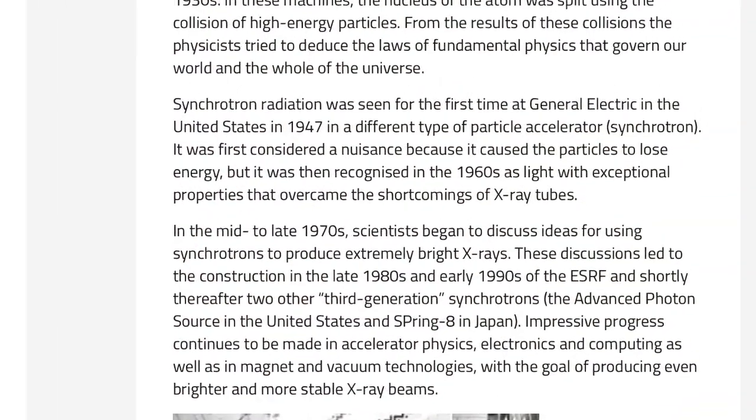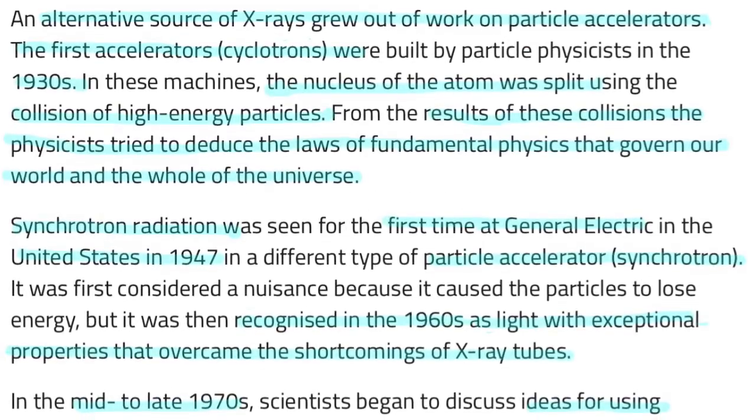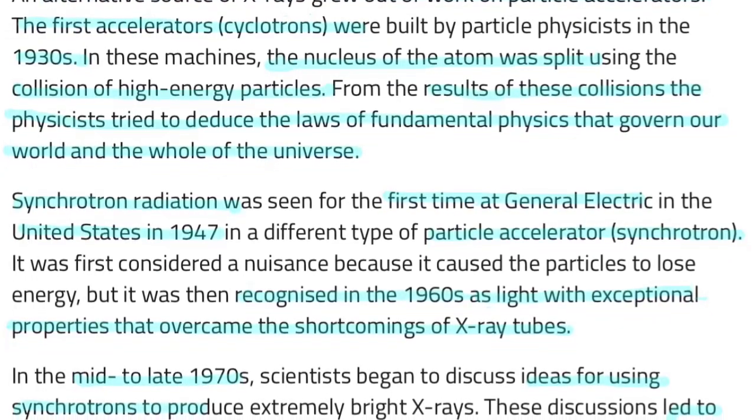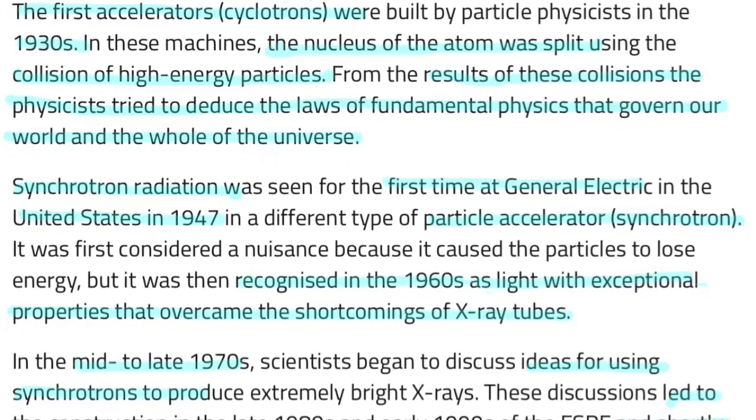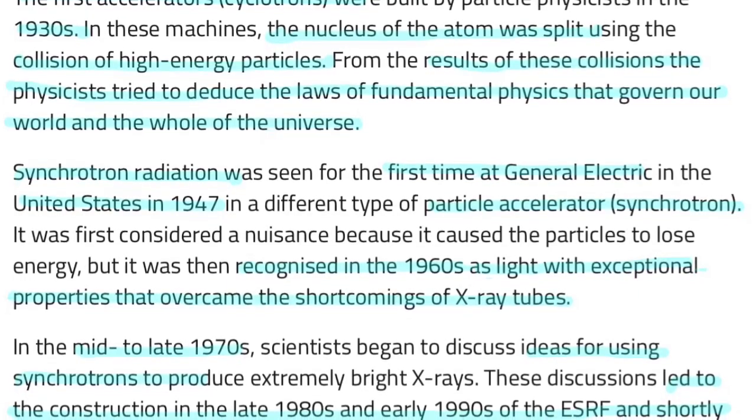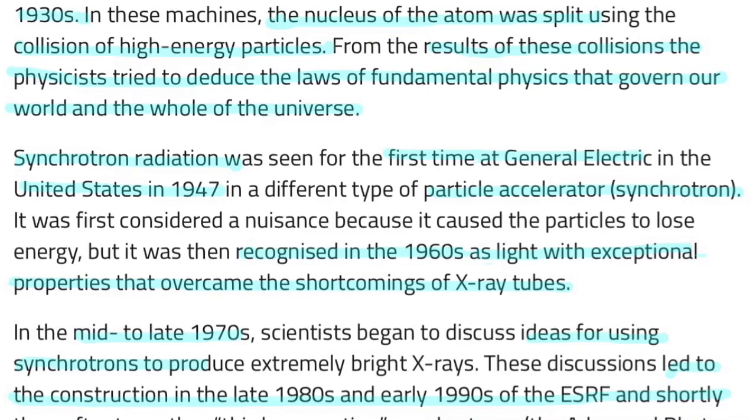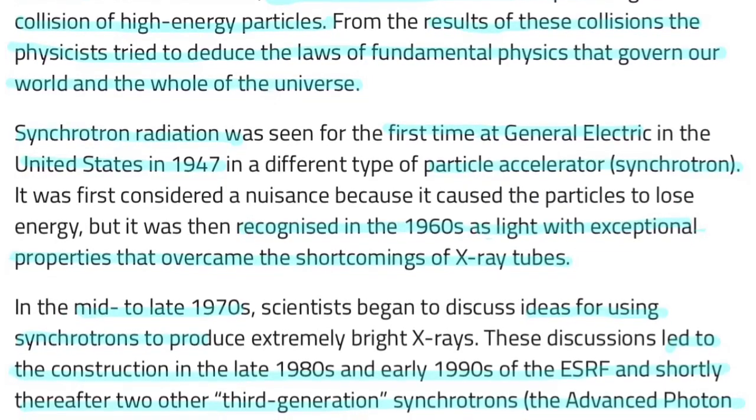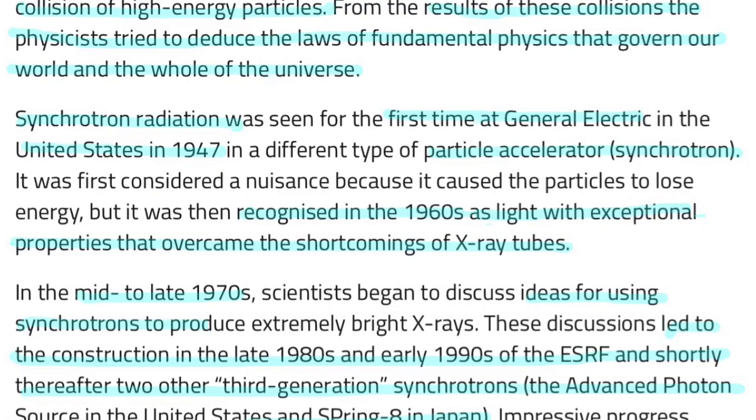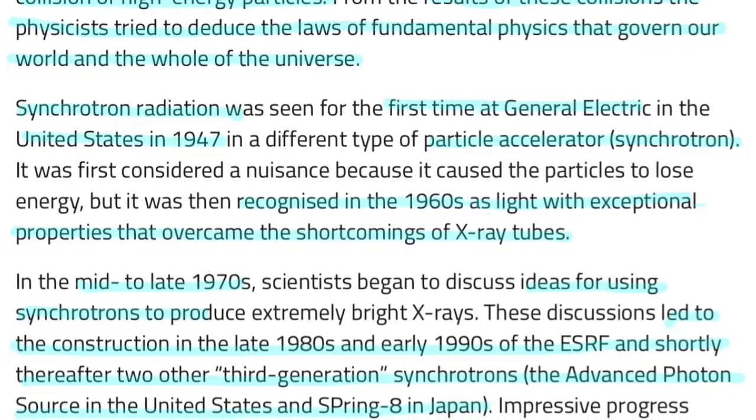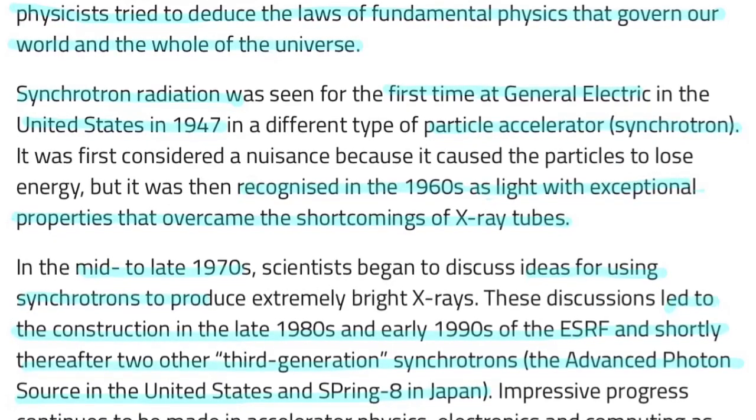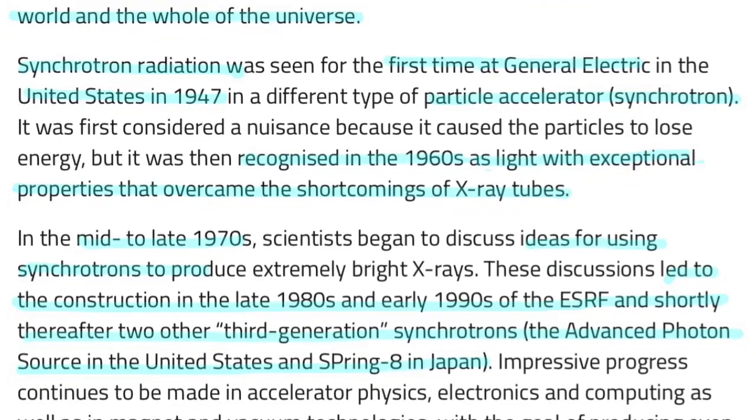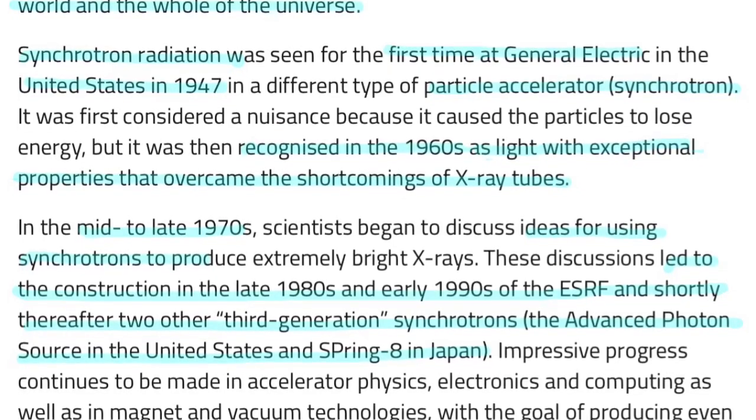And I found this. This is about x-rays. It's a deviation in our history, I believe. And it says the first accelerators, which were cyclotrons, were built by particle physicists in the 1930s. The nucleus of the atom was split in these cyclotrons using the collision of high energy particles, and from the results of these collisions, physicists tried to deduce the laws of fundamental physics that govern our world and the whole universe, kind of like what they've been doing at the LHC. Synchrotron radiation was seen for the first time at General Electric, huge company, in United States in 1947 in a different type of particle accelerator, the synchrotron, which those are still seen today. It was considered a nuisance first because it caused the particles to lose energy, but then it was recognized in the 1960s as light with exceptional properties that overcame the shortcomings of x-ray tubes.